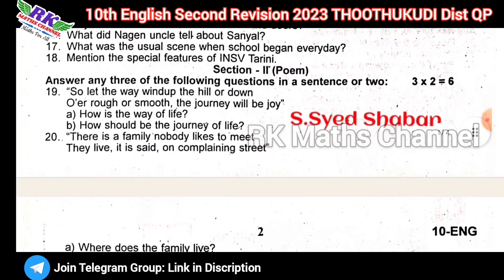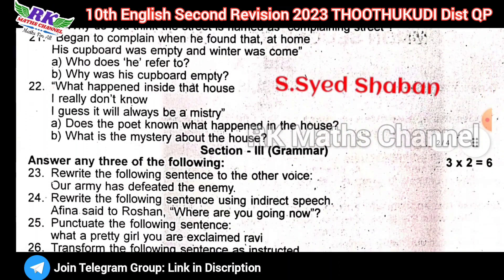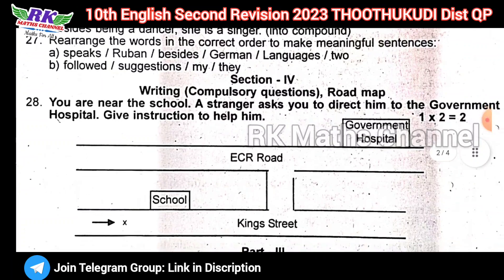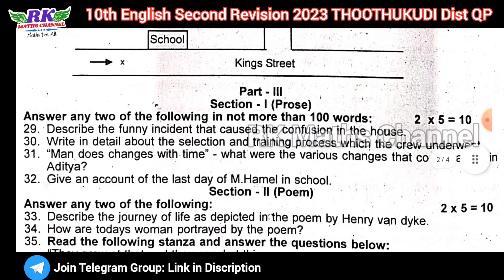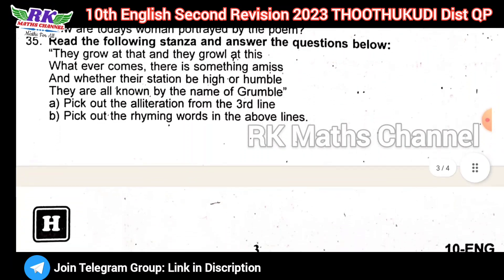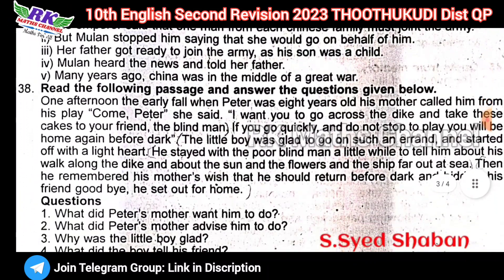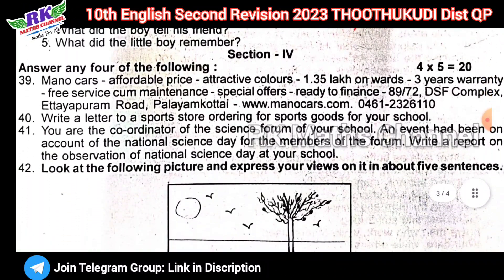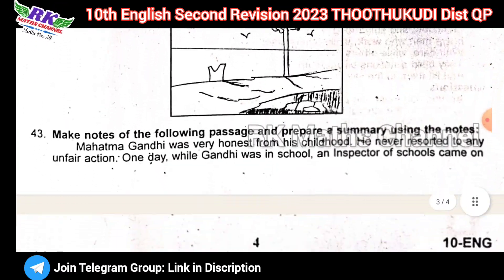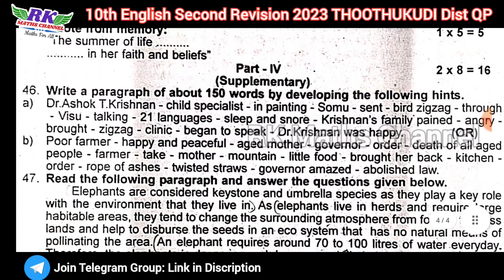Prose, poem, questions. You can download the process — the process is connected to the marks. Next, grammar: 2 marks. And the road map question paper. Next, Part 3: 5-mark questions, poem 2 questions and supplementary 5 marks, and Section 4 grammar 5 marks, 4 questions and 6 questions, and Section 5 memory compulsory questions. Next, Part 4: 8-mark questions.